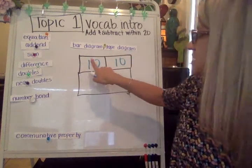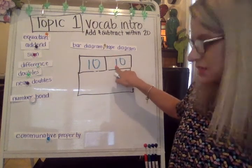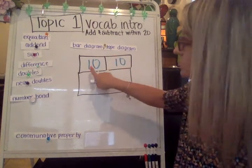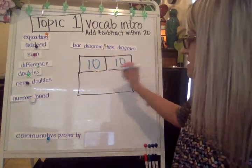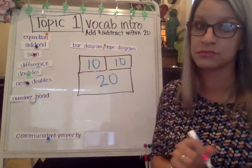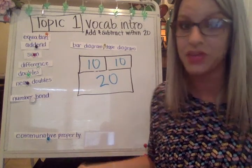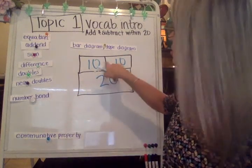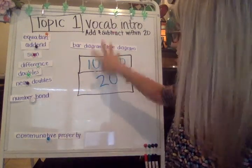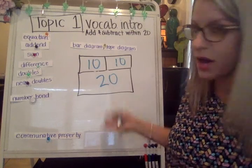10 plus 10 is 20. That's what a tape diagram looks like — these two boxes equal the amount of the bottom box.